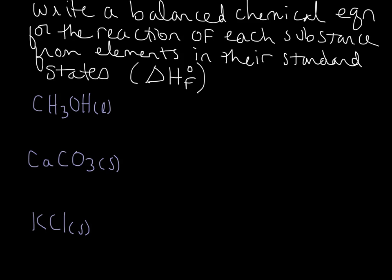So let's look at ethanol first, CH3OH. We can see that it has carbon in it, hydrogen, and oxygen. And so we've seen carbon in other examples, so we might remember that the standard state for carbon is solid graphite, the graphite allotrope.